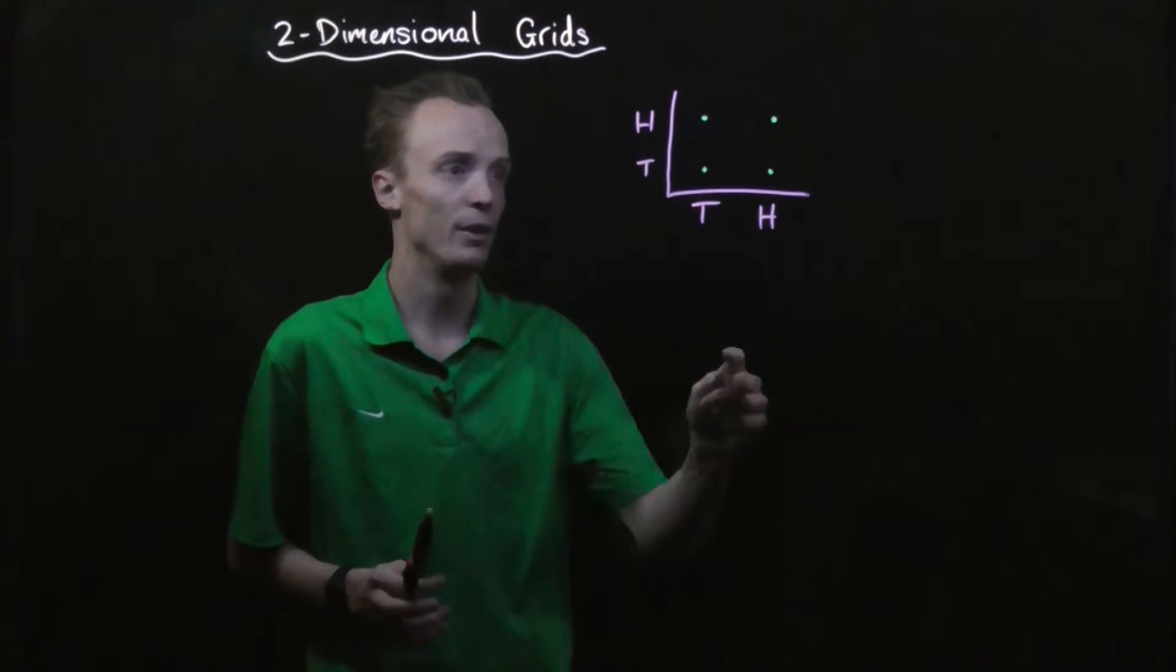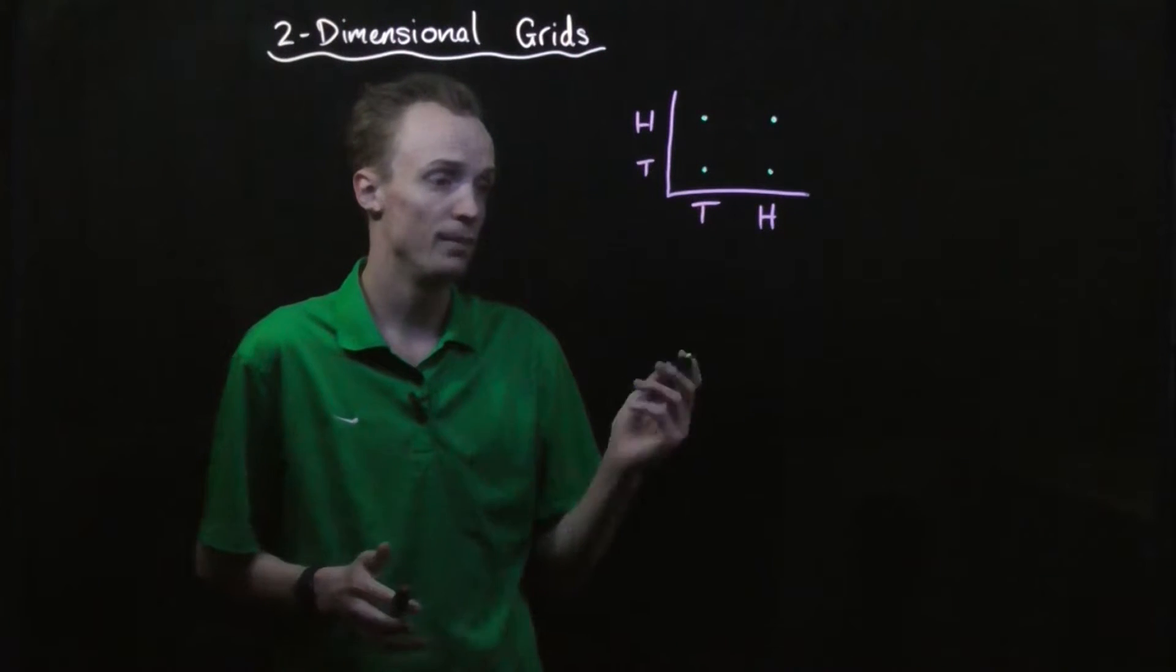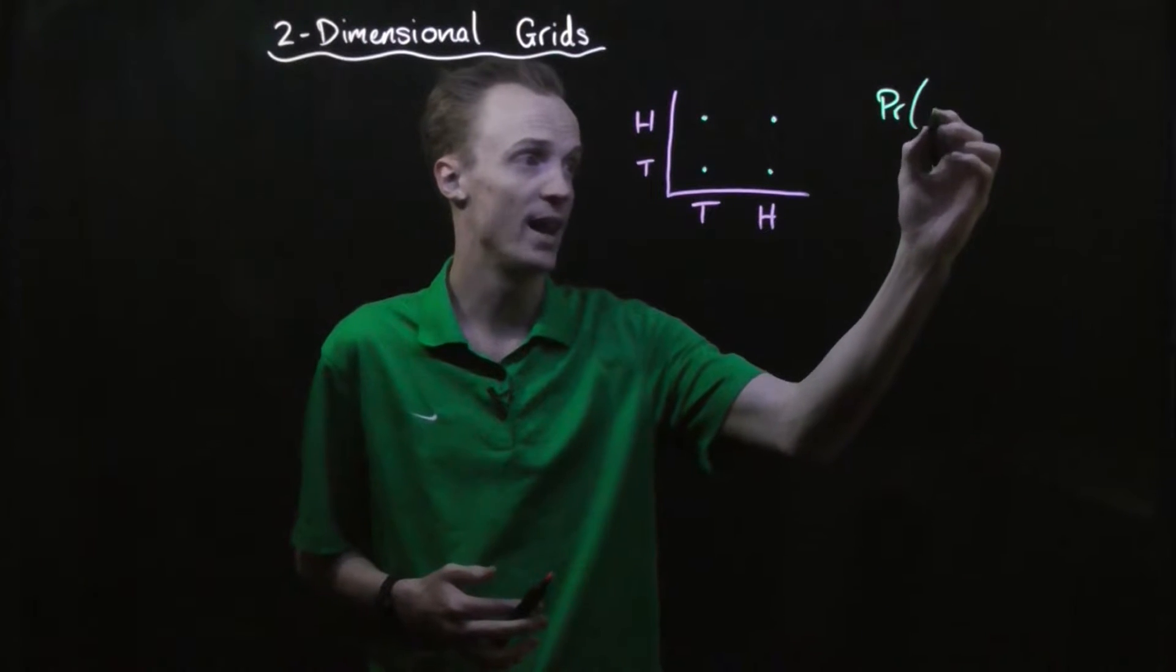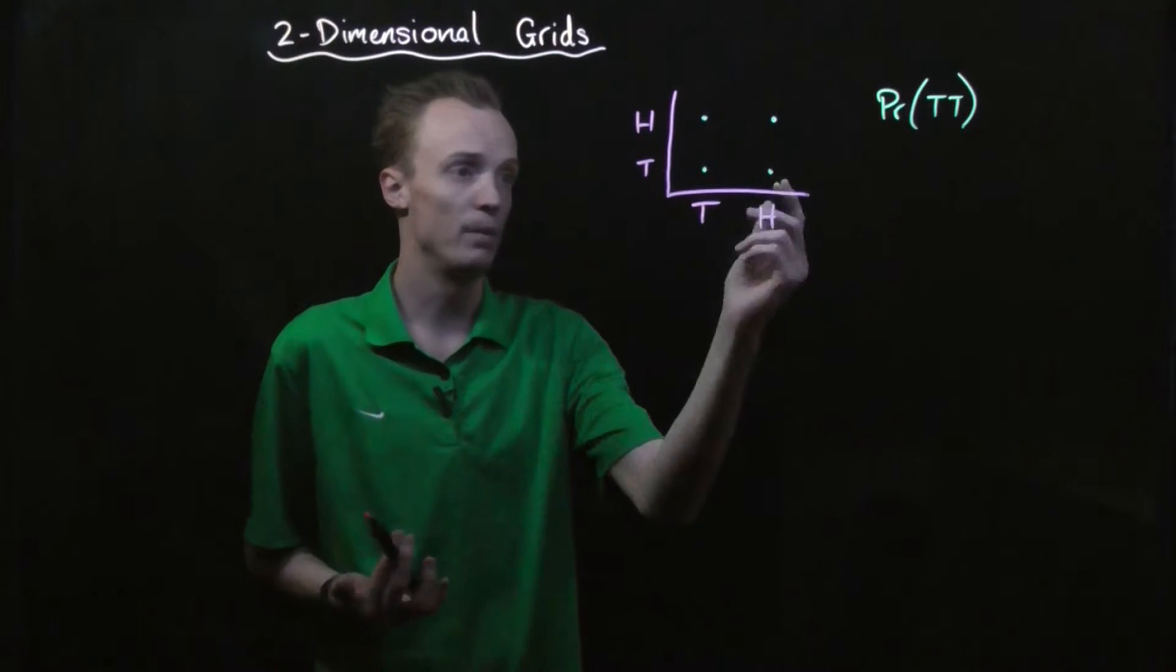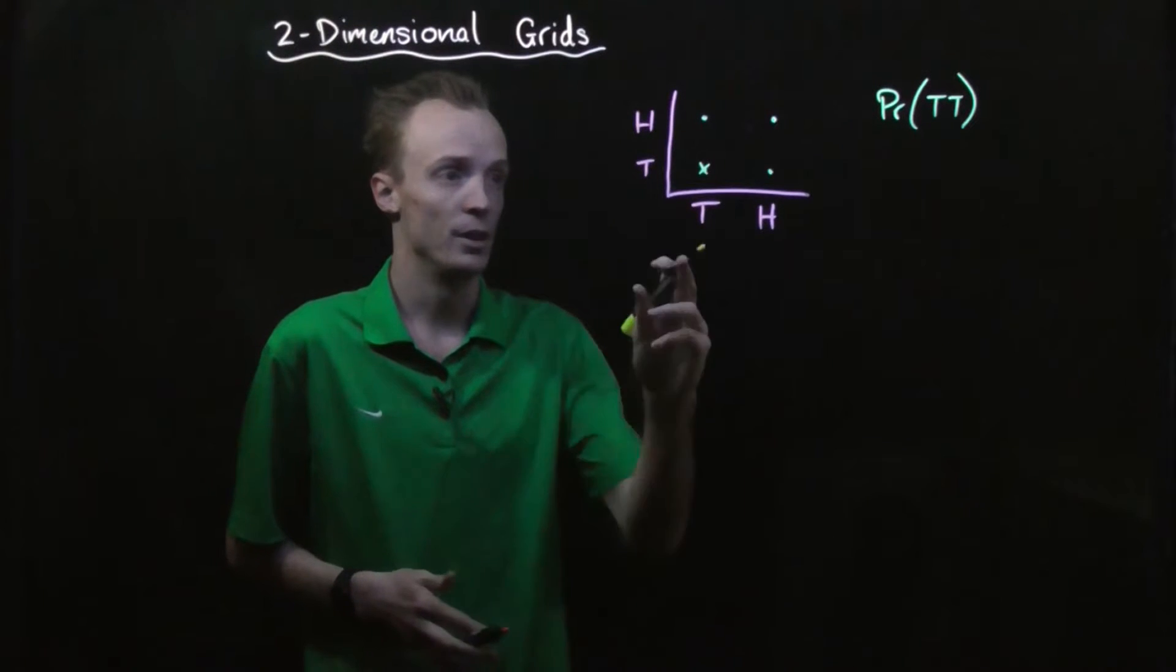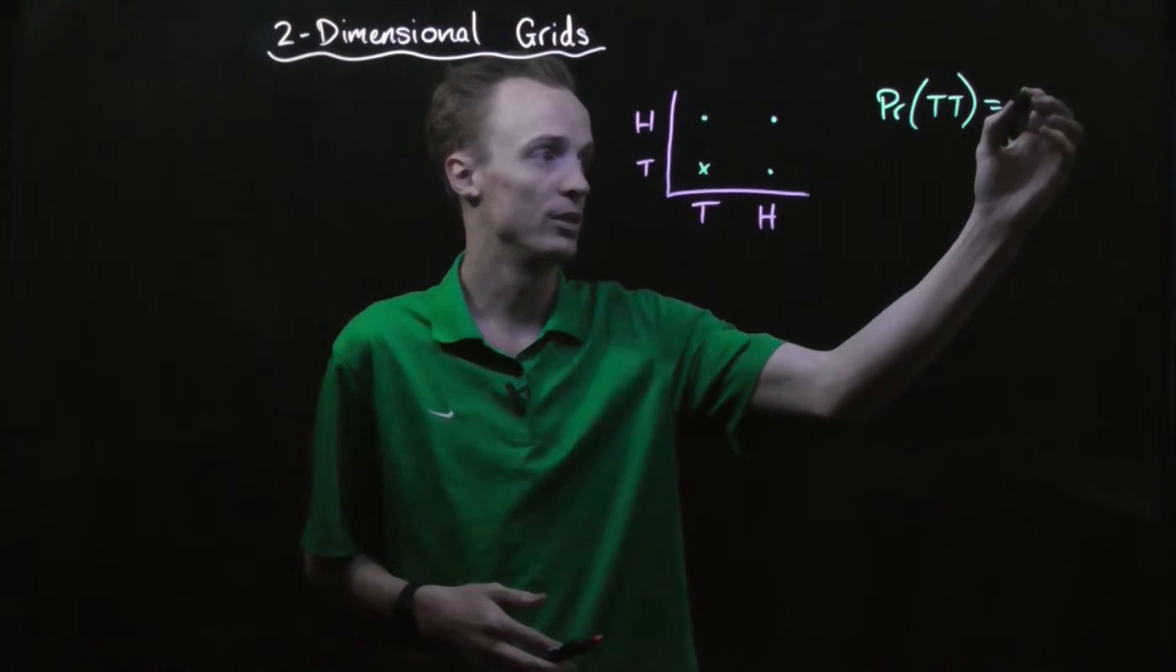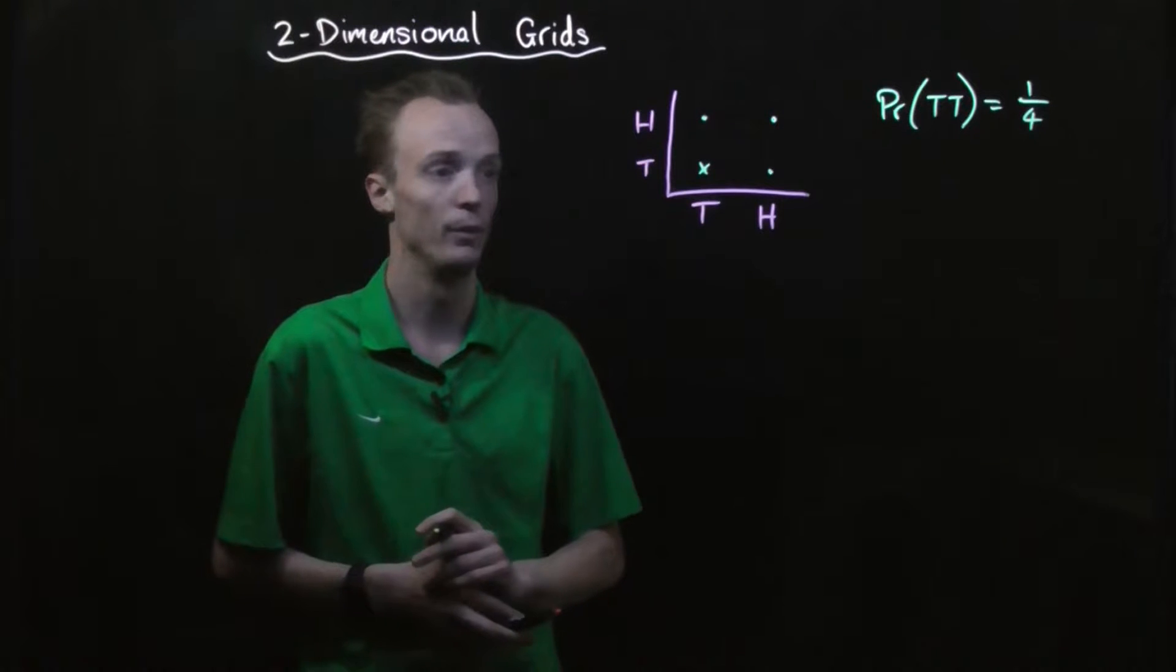So what we can see here is we've got four total outcomes. And what we can do is we can look at what is the probability of getting two tails. And we look here and we can put a little x where we've got a successful outcome. So in this case, we've only got the one successful outcome, so the probability of getting two tails is one out of the four total outcomes that we've got.